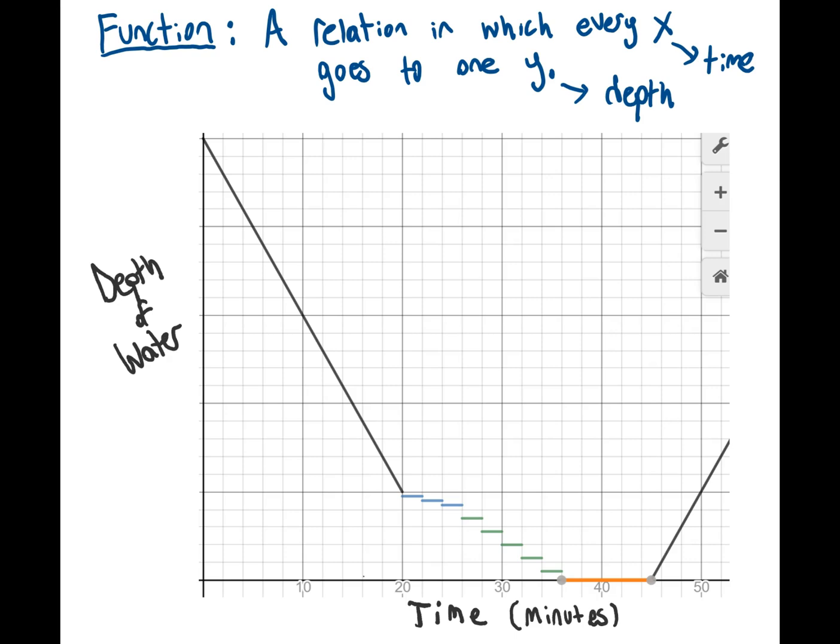You can see, for any time that I select, if I look up, there's only one point on the graph that's the depth at that point. At this time, there's only one depth. At this time, there's only one depth. It's okay that there's the same depth at multiple times, but every time is going to only one depth.